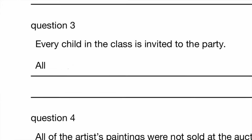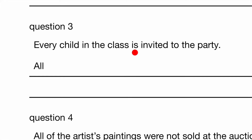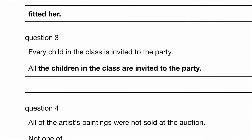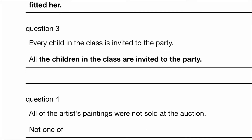Question 3: Every child in the class is... The reason 'is' is singular here is because 'every child' is singular — 'every' makes the subject singular, which means you take on a singular verb. But once we use 'all,' it is plural when dealing with countable nouns. So we cannot use 'child' again. All the children in the class — make sure you keep the tenses the same. In this case it's present, so your answer should be in present tense as well, except now you're using the plural form: are. So all the children are invited to the party.